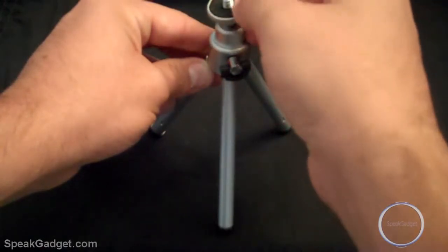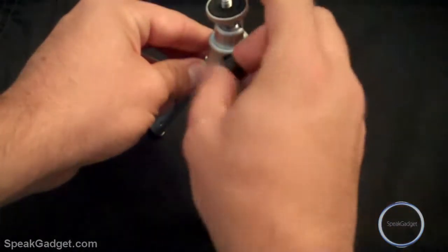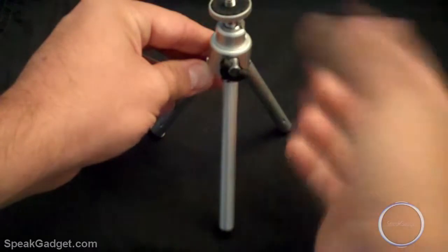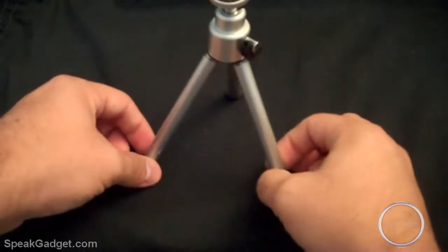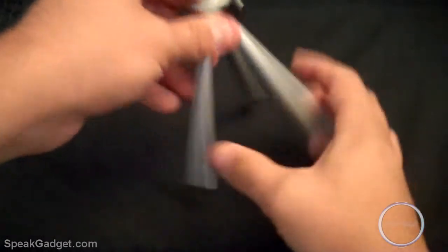And then you turn this to screw the camera on there. Once it's nice and tight, go back up, position it, and then go all the way to the left and it locks in place. See, and that's all that it does.